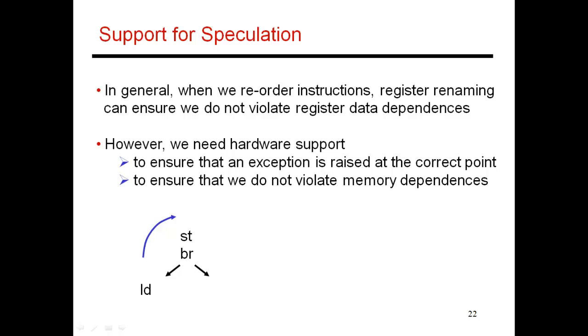So here's an example. I have a store, I have a branch, and then the branch goes one of two ways, and there's a load on one of the ways. Let's say the load is along the then part. Now, this load, let's say, is known to be a long latency instruction. Perhaps it often results in a cache miss.